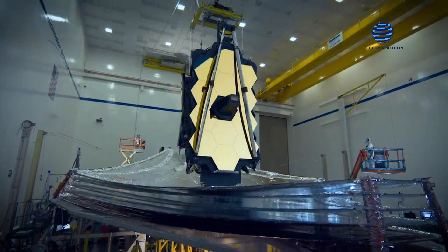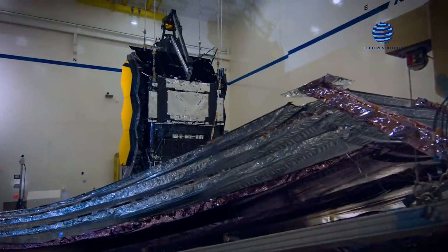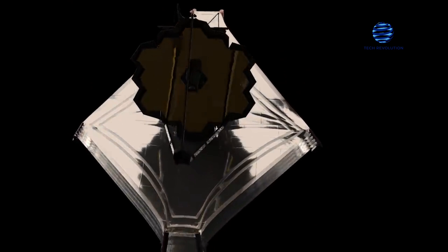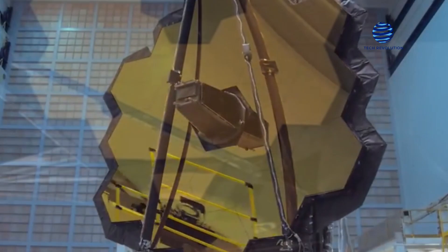The James Webb's enormous 6.5-meter diameter reflector is looking outward and gathering data and images for science. It is the biggest and most potent telescope that humans have ever sent into space, and it is already providing new information about the universe. What then has the James Webb Telescope found thus far? What can we anticipate? And why did the James Webb images get the scientists so emotional?